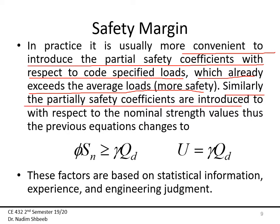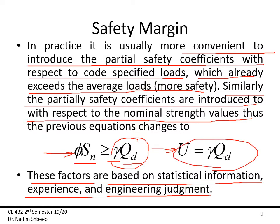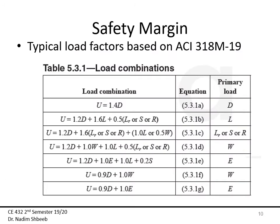Similarly, partial safety coefficients are applied to reduce the nominal strength values, which are more conservative than the mean strength. I'll introduce the factor phi multiplied by nominal strength, and gamma multiplied by the design load — I'll call this the ultimate load, hence the name 'ultimate strength method.' These factors are based on statistical information, experience, and engineering judgment.